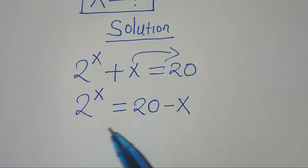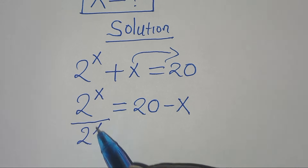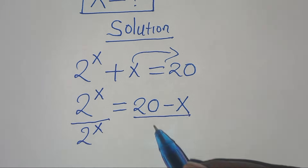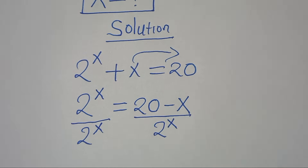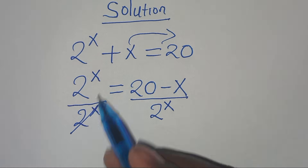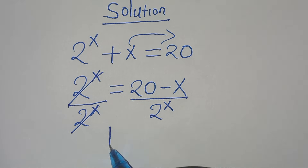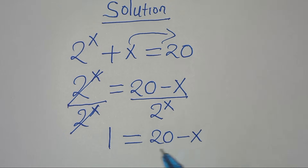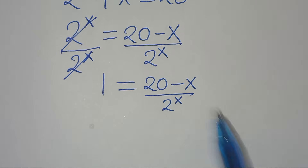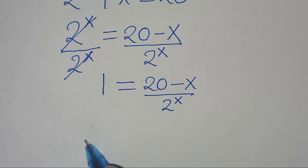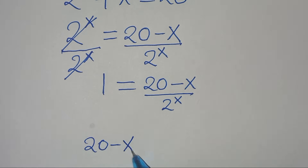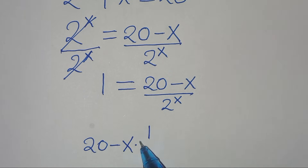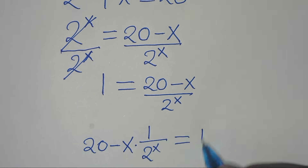The next step is to divide both sides by 2 to the power of x, so we simplify and get 1 equals (20 minus x) divided by 2 to the power of x. Let's rewrite this equation as (20 minus x) multiplied by 1 over 2 to the power of x, equals 1.